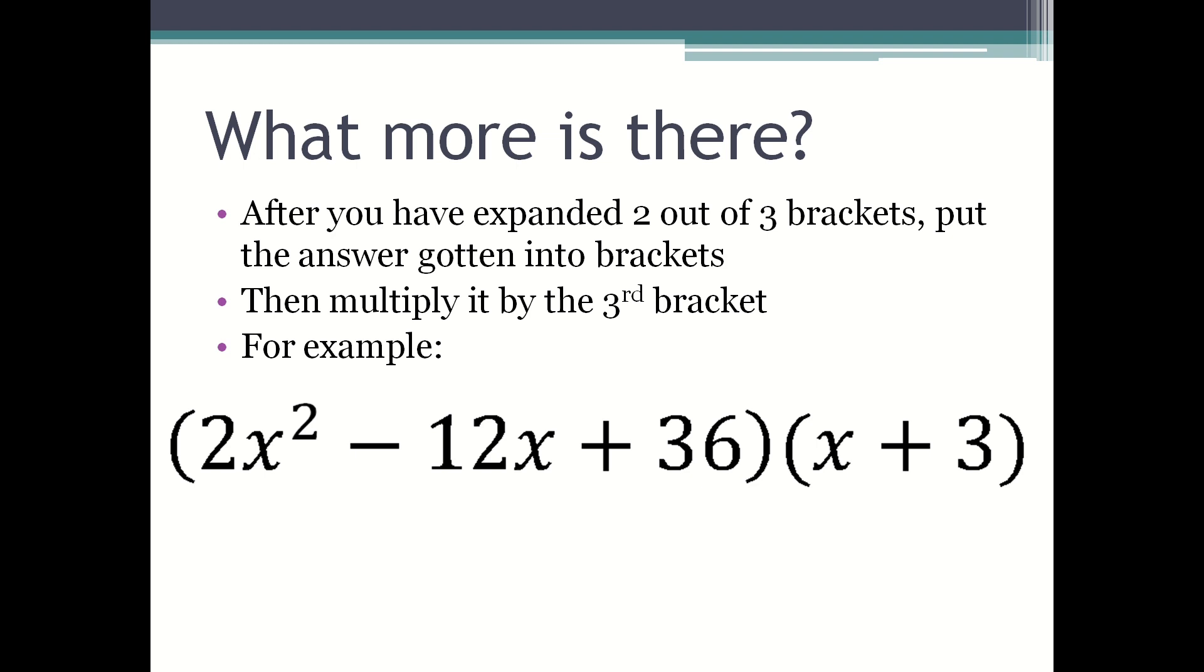For example, let's say that after expanding two of the brackets your answer was 2x² - 12x + 36. You put that into brackets and you multiply that by the remaining bracket which is (x + 3). So obviously the first bracket is the result of two out of three of the brackets.